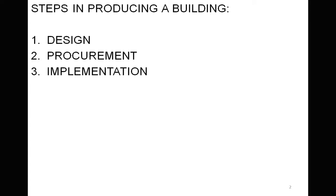To contextualize what I'm talking about in terms of procuring a building or procuring architecture, we can see the entire process as three steps. In order to produce a building, we have a design stage, a procurement stage, and an implementation stage. Implementation is the process of actually making, constructing, or building a piece of architecture from a documented design. Procurement is the process of buying a building's construction.